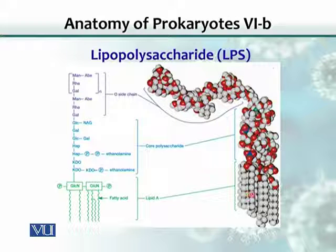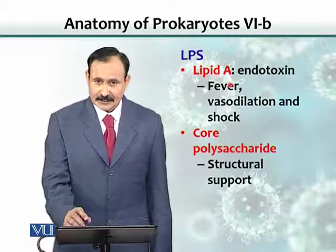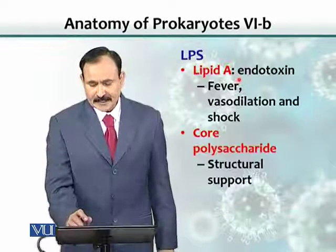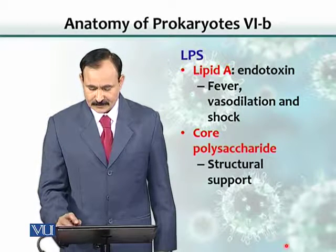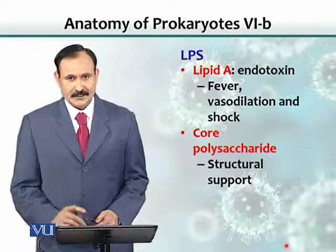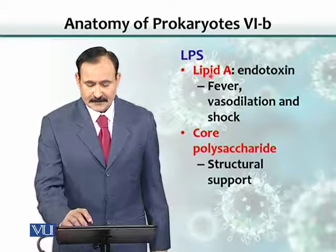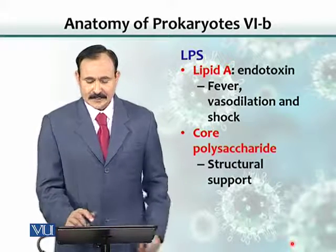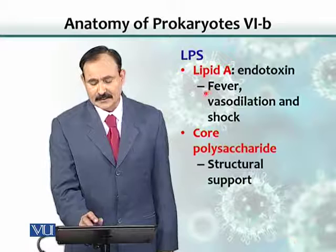Let's see what each component does for the bacteria. Lipid A is inserted into the plasma membrane here. This Lipid A acts as an endotoxin, which is of course a toxin for the body. If a bacterium invades or causes infection in the body, when the bacteria dies, this Lipid A gets released into the circulation.